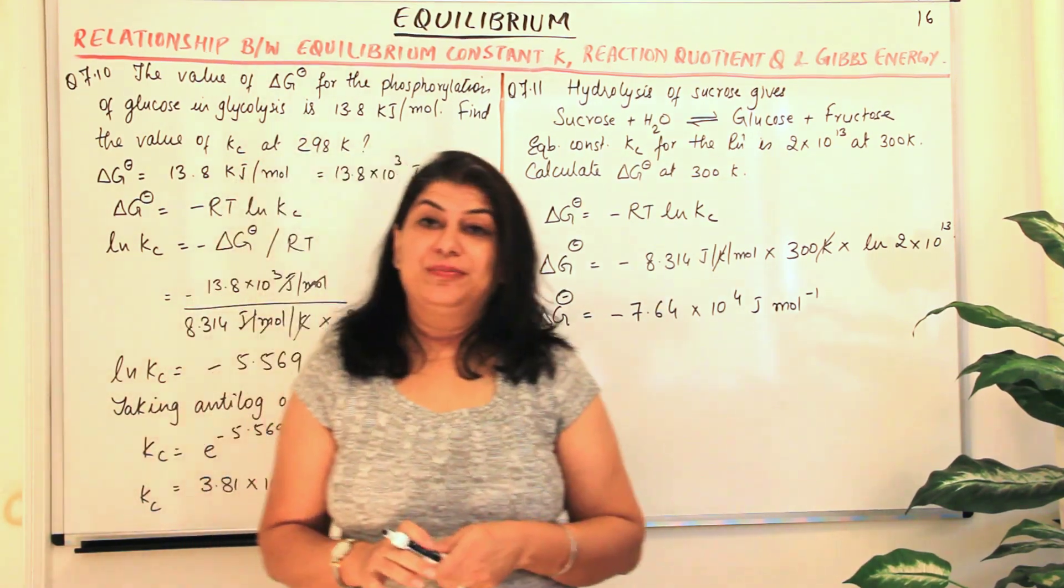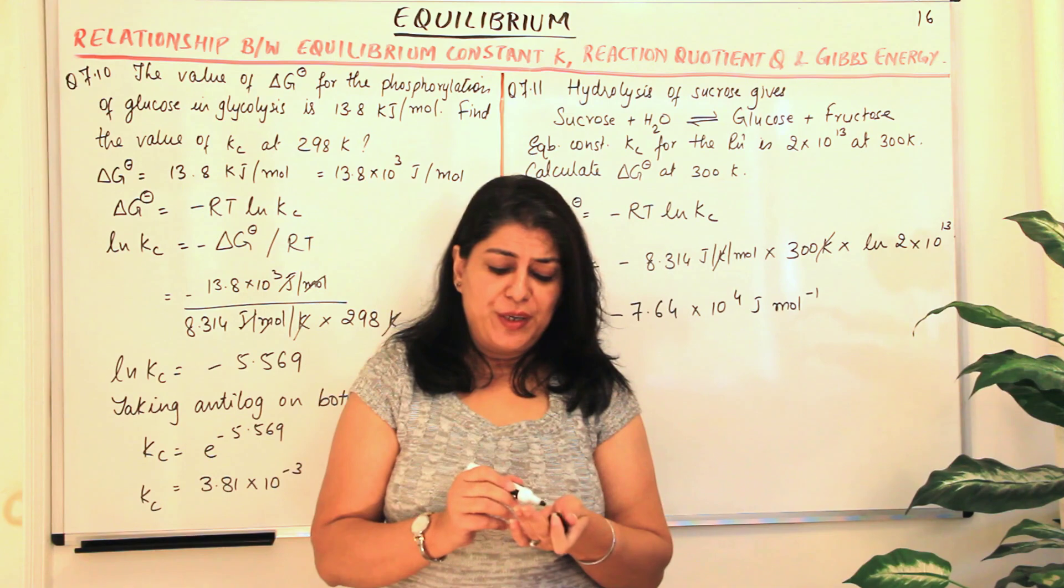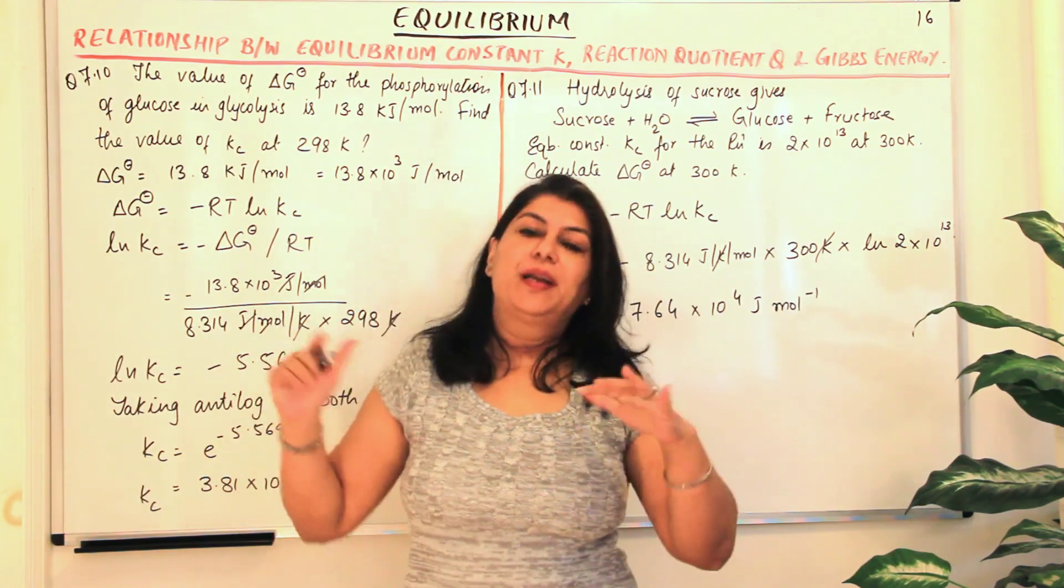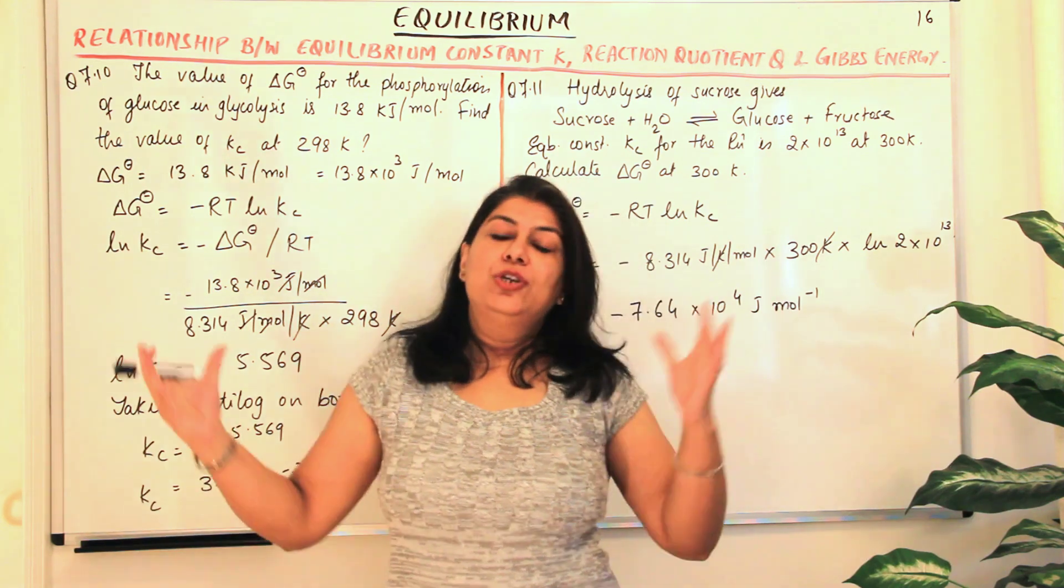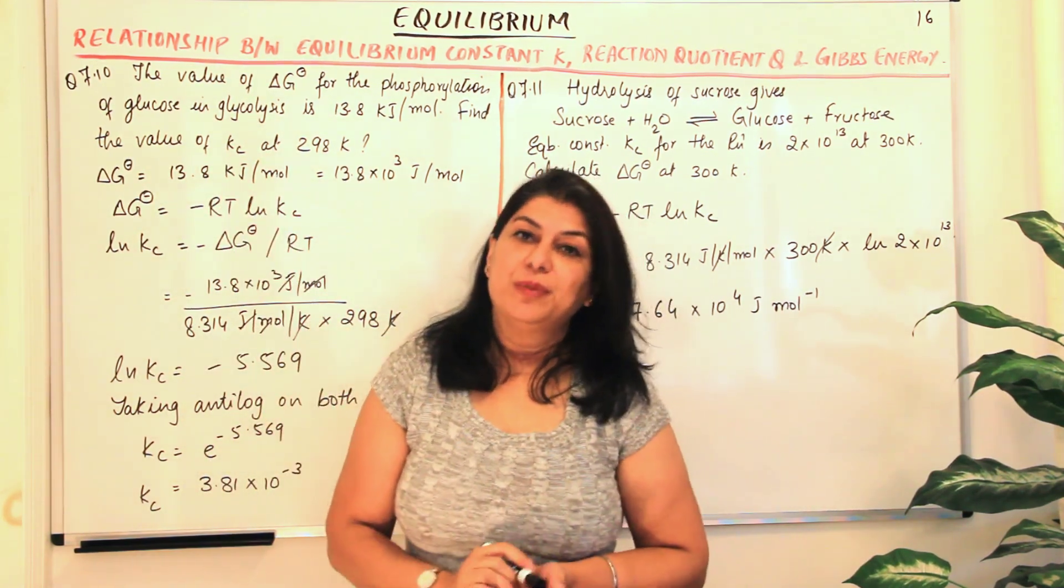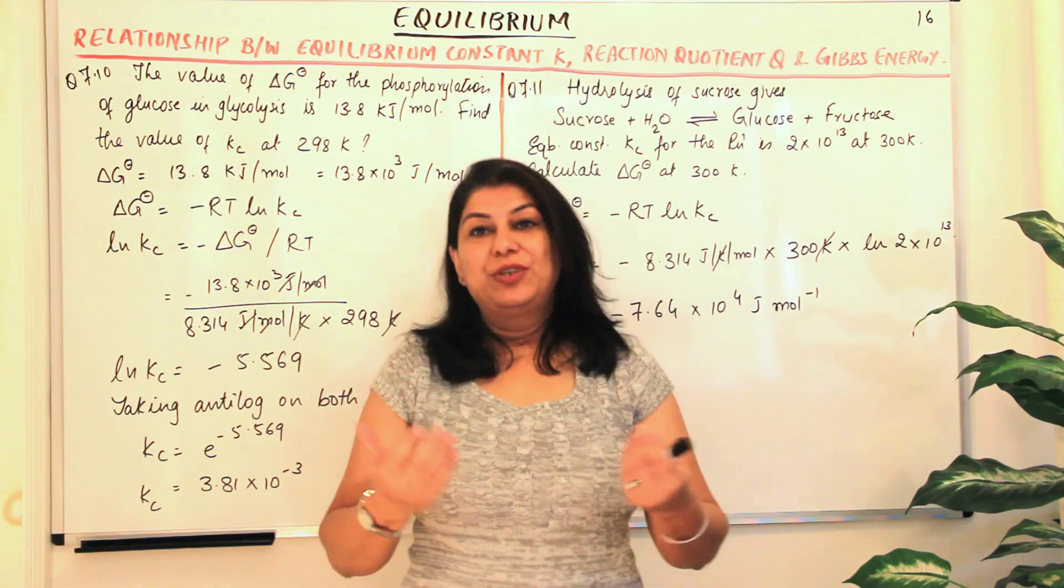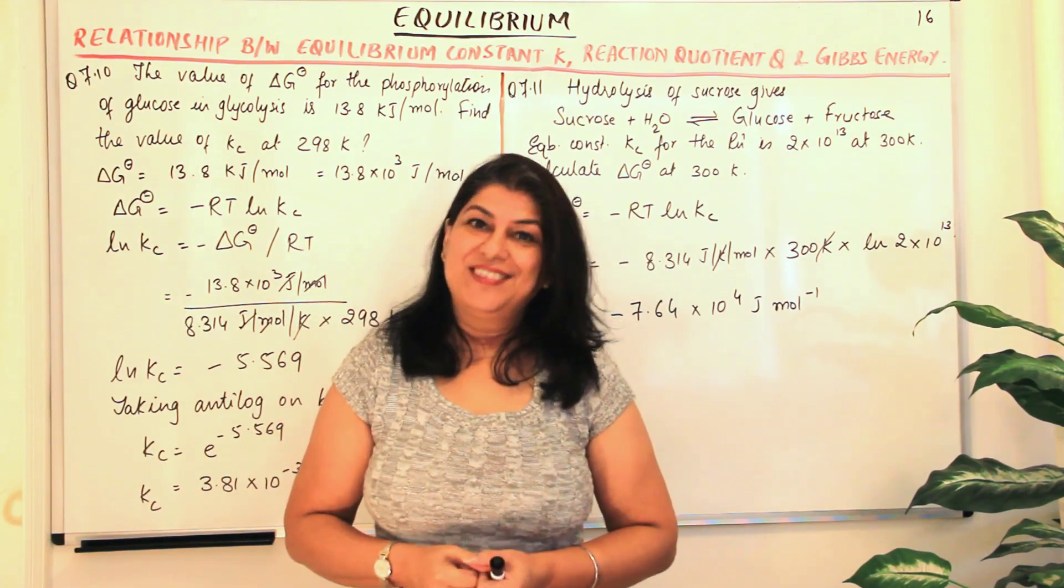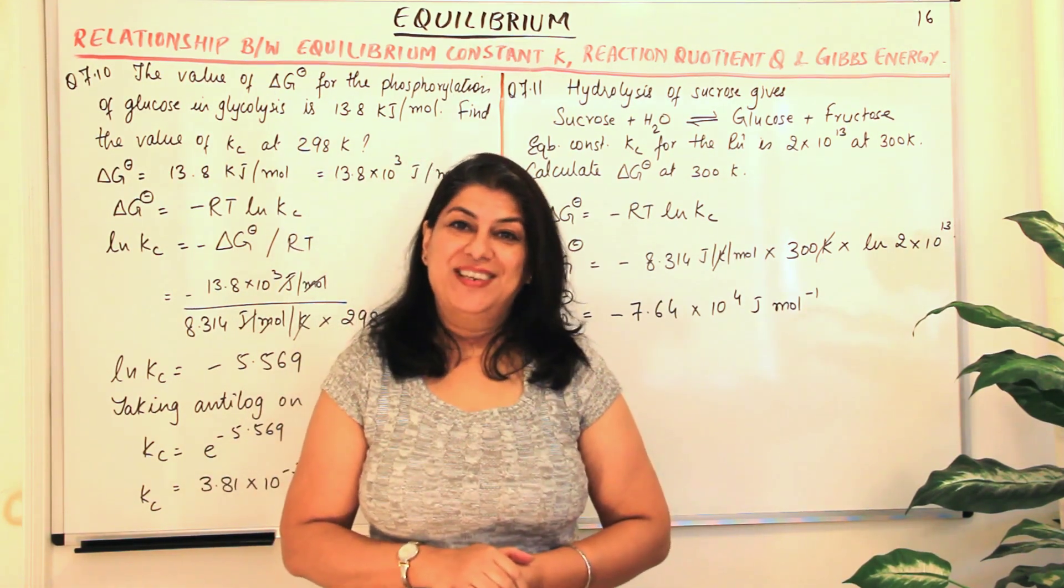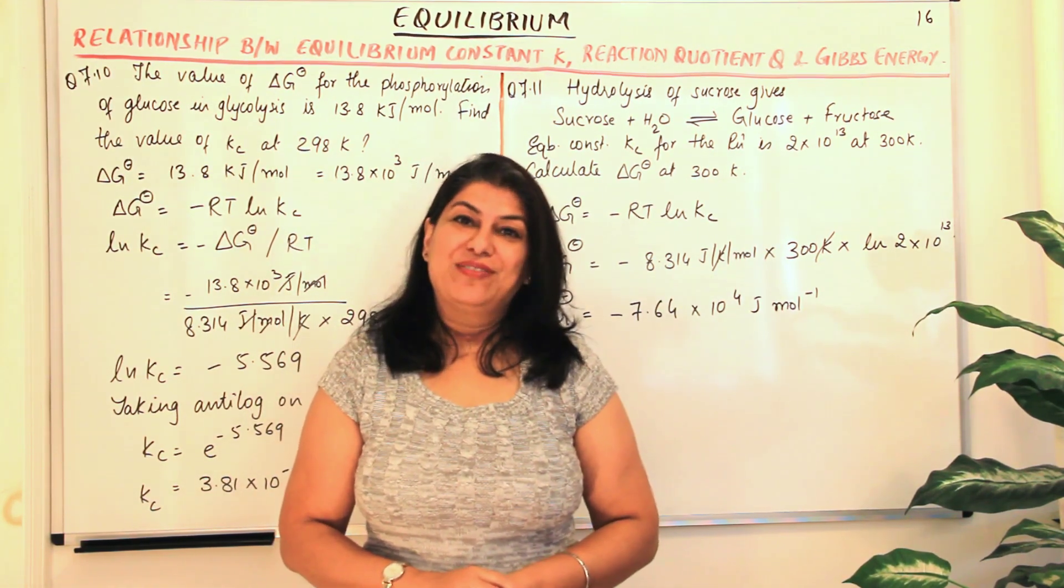This is the answer for this question. I hope with these two numerical problems it becomes easier for you to understand what is the relationship and how do we use that relationship to calculate the variable in the equation which is not available to us. If you found the video helpful, give it a thumbs up, subscribe to my channel, recommend it to your friends, and please keep returning for more videos on chemistry. Thank you for watching and bye-bye for now.